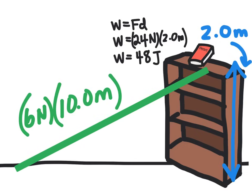Which means the work is going to be different. And so because you applied 6 newtons of force for a distance of 10 meters, multiply those together and you end up with 60 joules of work.